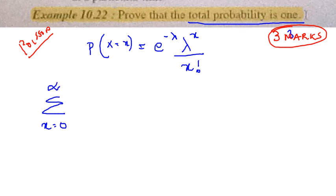Then my probability of x, where x takes the value between 0 to infinity, I can write it as a sum from x being 0 to infinity. Substitute this formula here, so it is going to be e^(-λ) λ^x by x factorial.